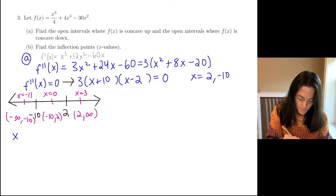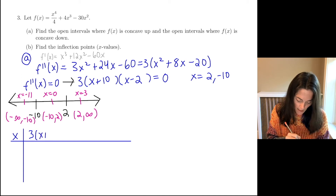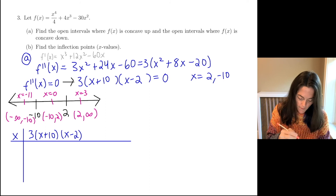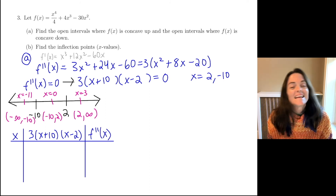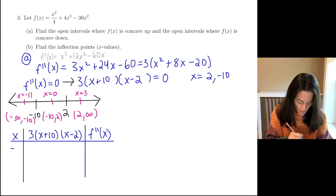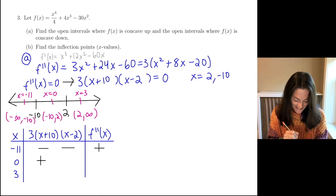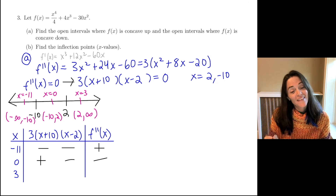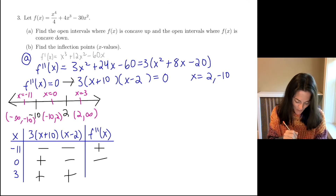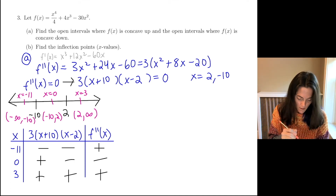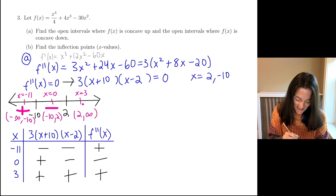So if I make my chart — the factored second derivative is 3 times (x plus 10) times (x minus 2) — I will multiply signs to give me the sign of the second derivative, testing at negative 11, 0, and 3. At negative 11: x plus 10 is negative, x minus 2 is negative, so the second derivative is positive. At 0: x plus 10 is positive, x minus 2 is negative, so the second derivative is negative. At 3: x plus 10 is positive, x minus 2 is positive — so the second derivative is positive. The signs are: positive, negative, positive.